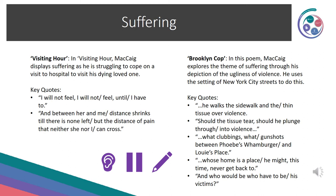In Visiting Hour, McCaig displays suffering as he struggles to cope with visiting his dying loved one: 'I will not feel, I will not feel until I have to' and 'the distance of pain that neither she nor I can cross.' In Brooklyn Cop, McCaig explores suffering through his depiction of the ugliness of violence using the setting of New York City streets. Key quotes: 'He walks the sidewalk in the thin tissue over violence', 'Should he plunge through into violence?', 'What clubbings, what gunshots between Phoebe's Wamburger and Lou's place', 'whose home is a place he might this time never get back to', and 'who would be who have to be his victims.'